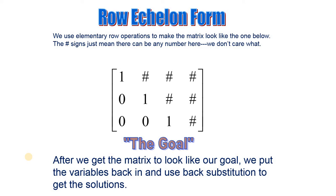The row echelon form is a matrix which will be in upper triangular form. On the main diagonal we have ones. In row echelon form, the number of leading zeros increases with each row — one will be here, one will be here, and so on. We use elementary row operations to make the matrix look like the goal form. This sign just means there can be any number.